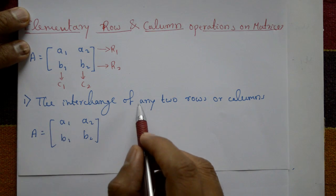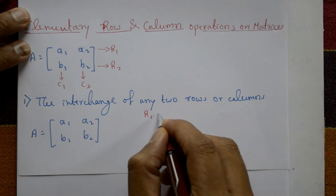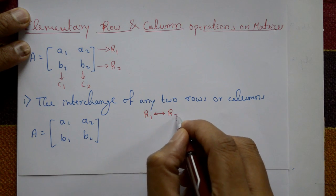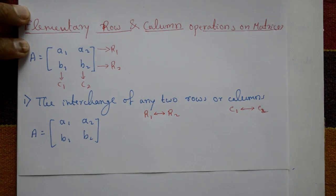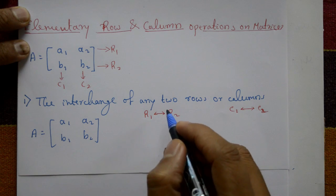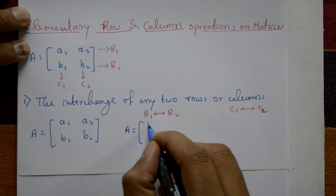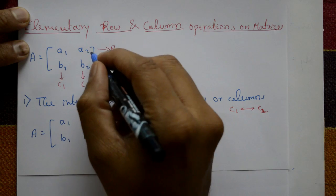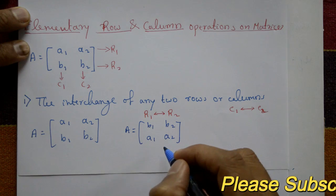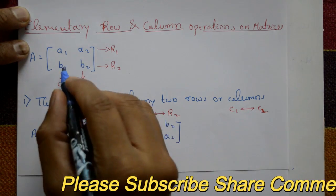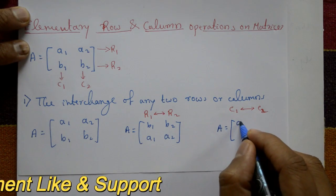First point: the interchange of any two rows or columns. That means we can interchange r1 and r2, or c1 and c2. For the matrix A, interchanging rows r1 and r2 means the first row becomes b1, b2 and the second row becomes a1, a2. Similarly, interchanging columns c1 and c2 gives a2, b2 in the first column and a1, b1 in the second.